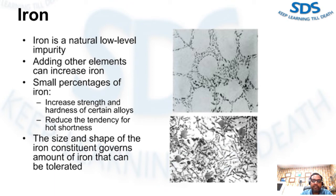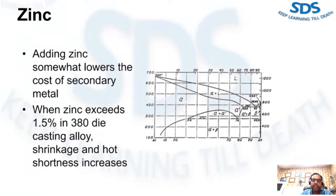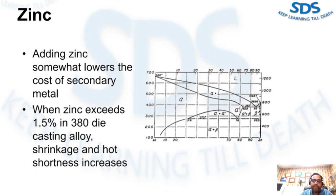The primary effect of up to 3% zinc in aluminum die casting alloys is to somewhat lower the cost of secondary metal. When zinc exceeds 1.5% in 380 die casting alloy, shrinkage and hot shortness increase. Design consideration for this effect should be given when casting different dimensional configurations such as thick or thin sections in heavy wall castings or castings with large bosses.